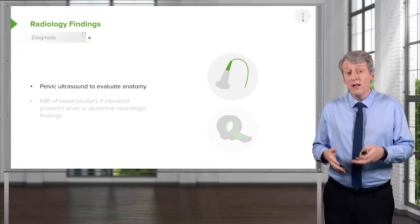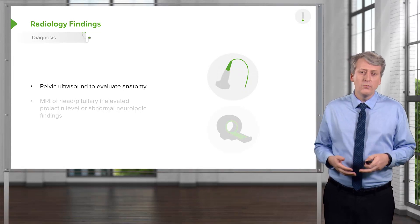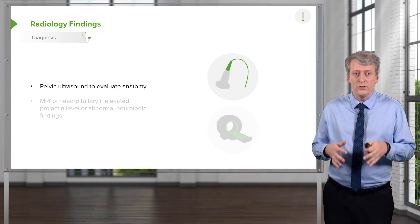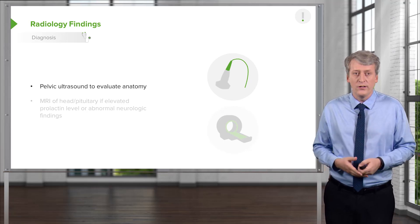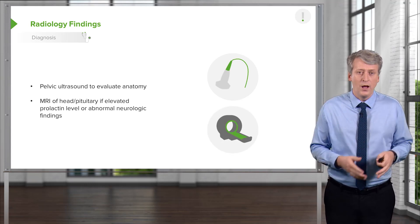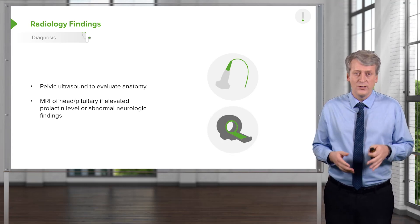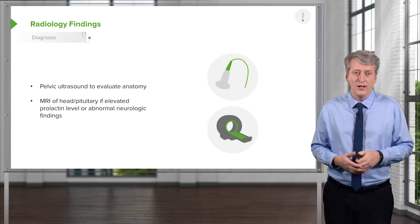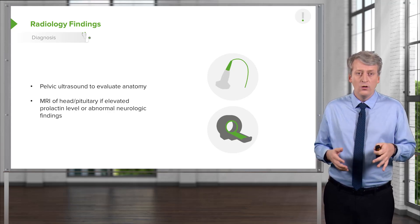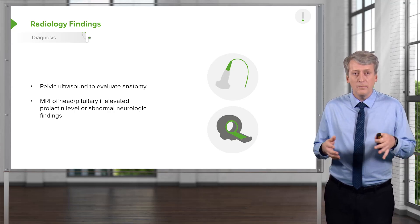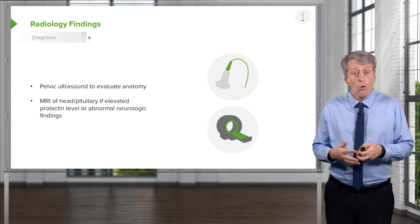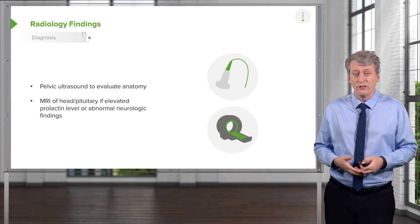A pelvic ultrasound may be useful to identify and evaluate the anatomy of the genitourinary system. If we suspect a central problem — for example, a low LH and FSH — we might want to do an MRI of the head or pituitary, especially if there's an elevated prolactin level or abnormal neurologic findings.